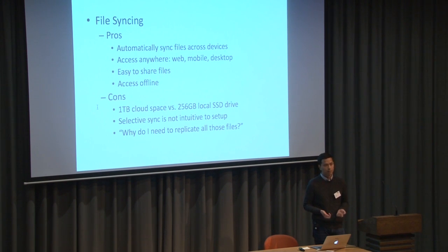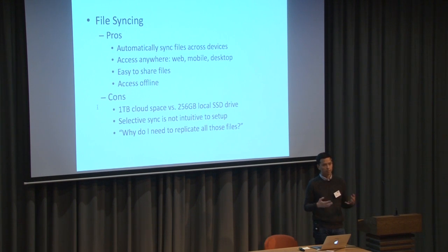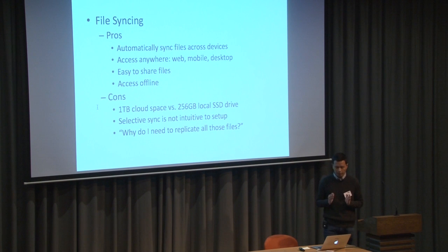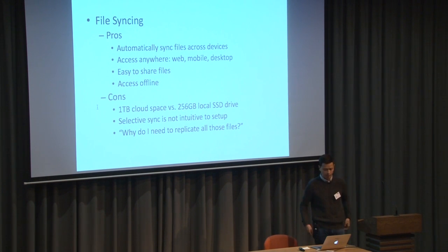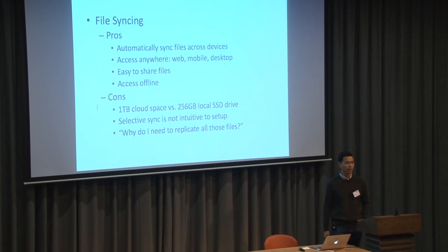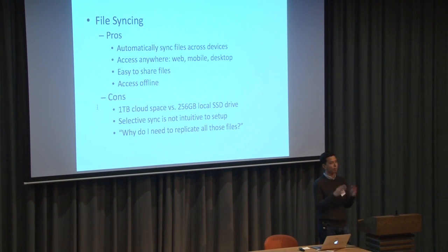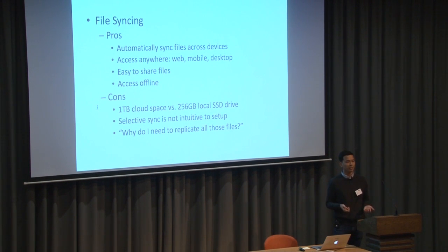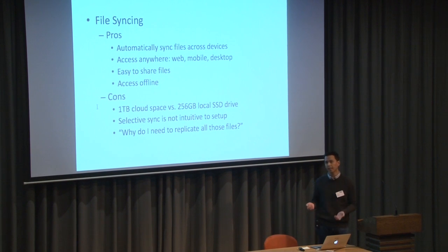In some cases, file syncing can be inconvenient. Today we may have very large cloud storage space but very limited local storage — for example, a MacBook may have only about 225 gigabytes of SSD. One solution is selective sync, but it can be quite annoying and counterintuitive because by default all files will be synced. A few gigabytes of files shared to you will sync to your desktop, and you need to go into the interface and uncheck boxes to prevent syncing.